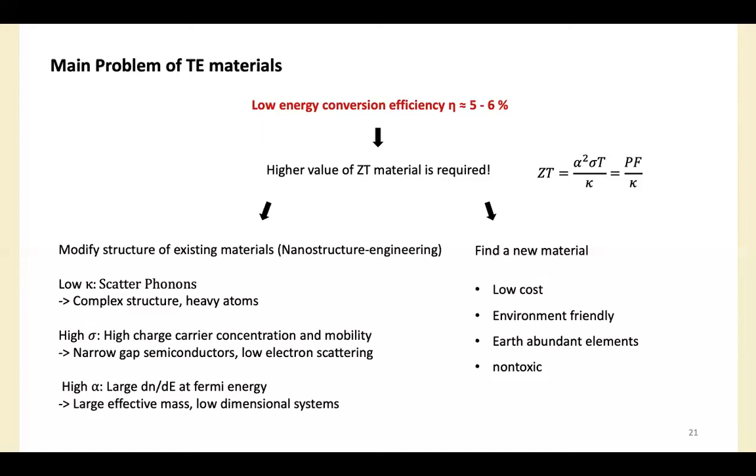Seebeck coefficient can be increased by large density of states at Fermi energy by substituting to large effective mass atoms and low dimensional systems. But you should keep in mind that it is very difficult to improve all three variables at once because these three parameters are interdependent.